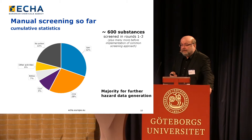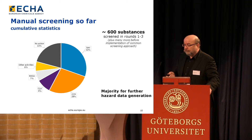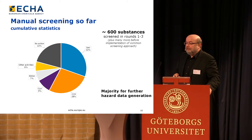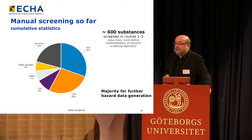So, to this IT-based first screening step, which gives us, across all registrations in ECHA's database, a priority list of substances — from this IT-based list, ECHA prepares a short list of approximately 250 substances, which are then in the second step manually screened by the member states.